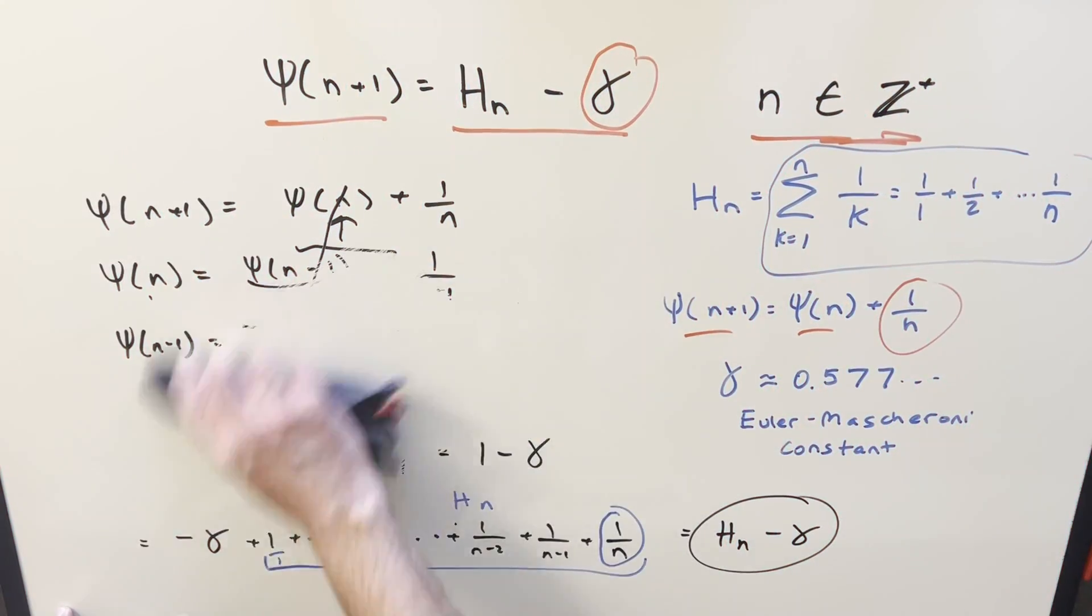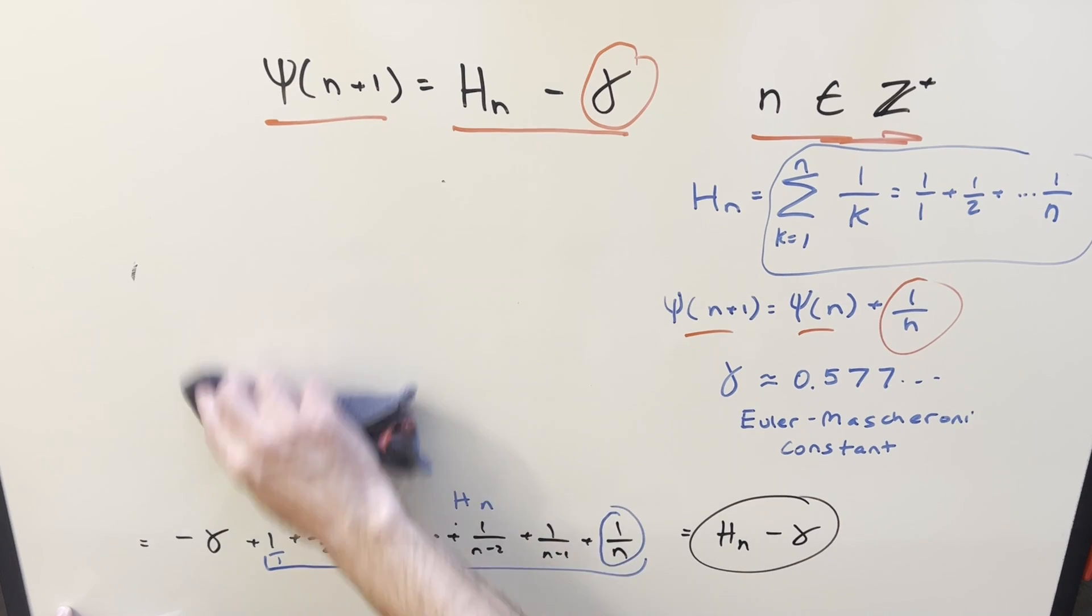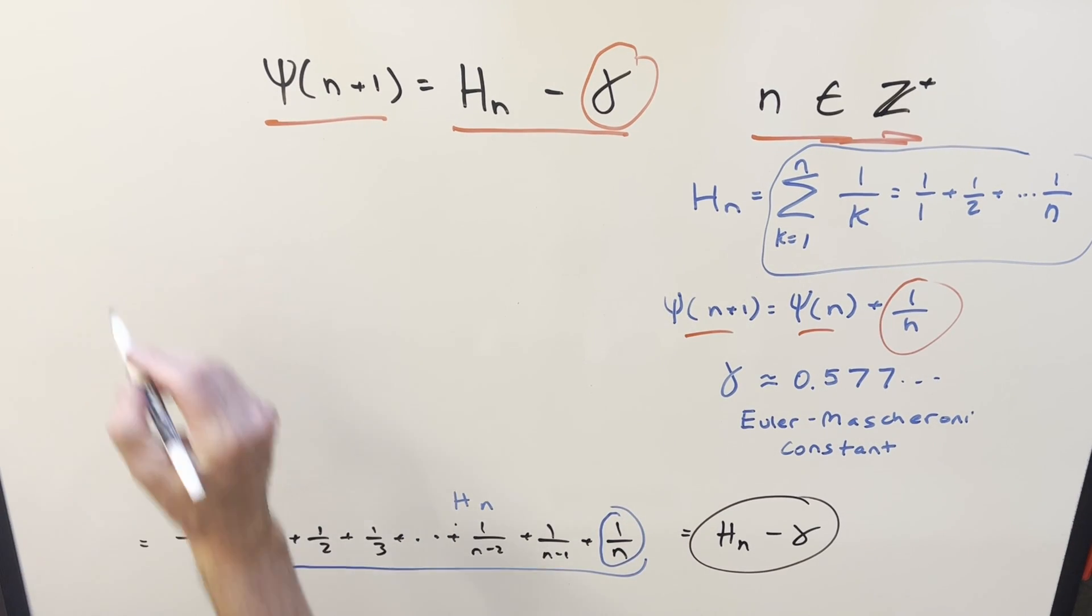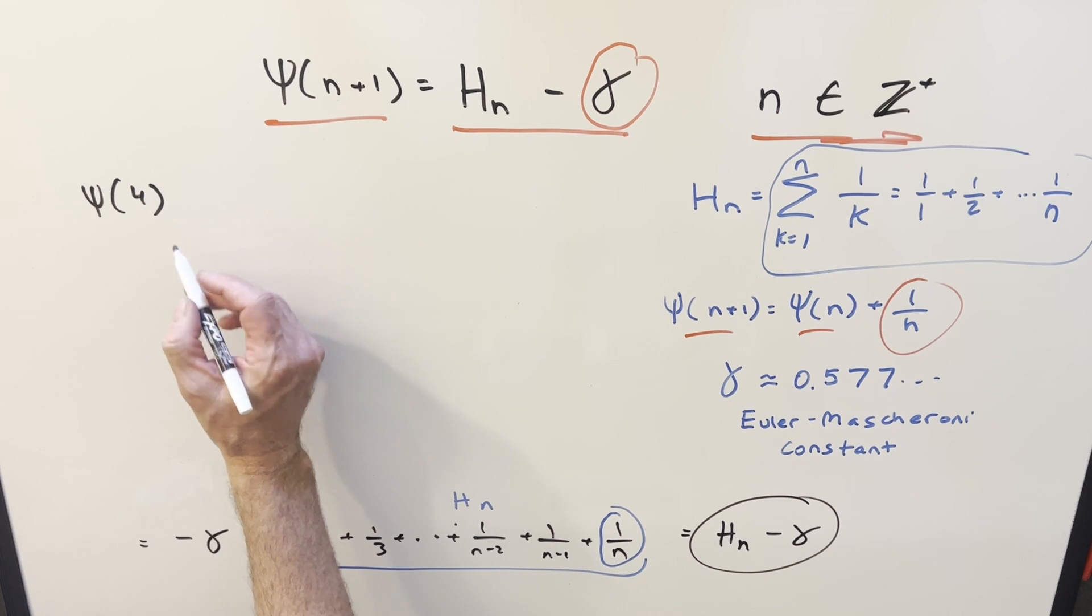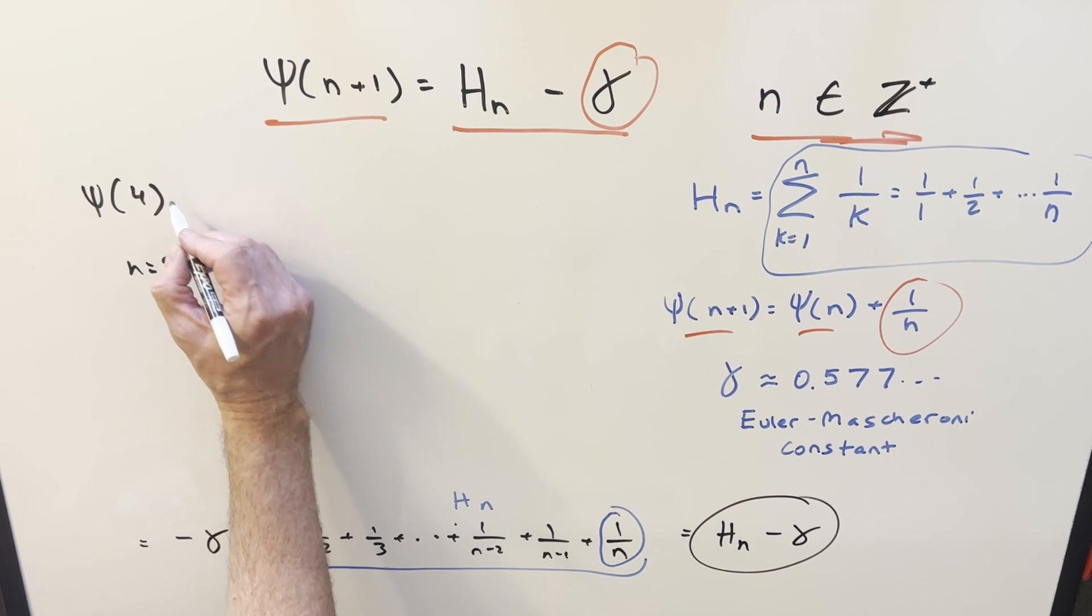And so let's just look at a really quick example, just doing this to get a numeric value for this. So what we'll do is, if I want to find digamma, I think let's do 4. So if we do digamma of 4, then our n value for this is going to be just equal to 3.